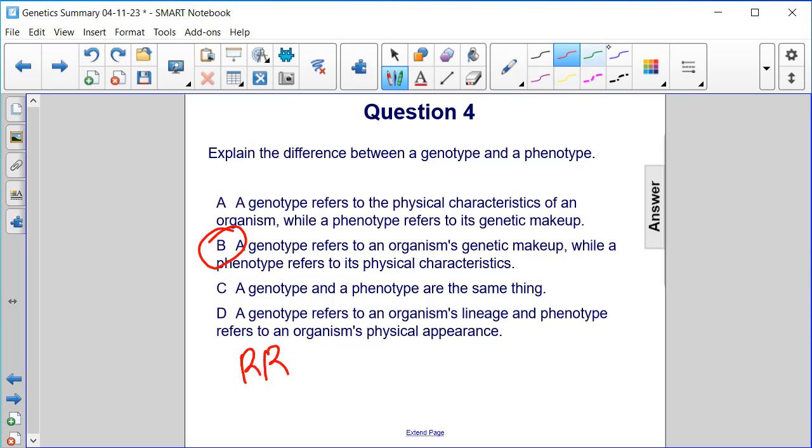So if we think back to those possible genes that we saw on the previous question, there are three different genotypes here, the genetic makeup. There's homozygous dominant, heterozygous dominant, and homozygous recessive.